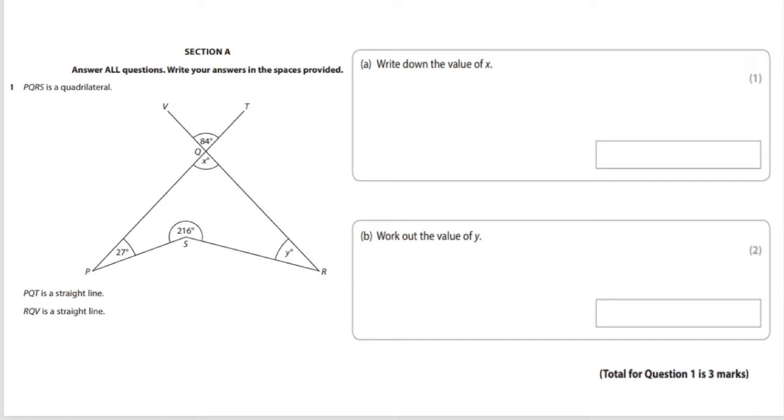If we were going to put this into math speak we would say non-adjacent angles formed by two intersecting lines are always congruent. So this one is quite simple really. The answer to this is 84 degrees.